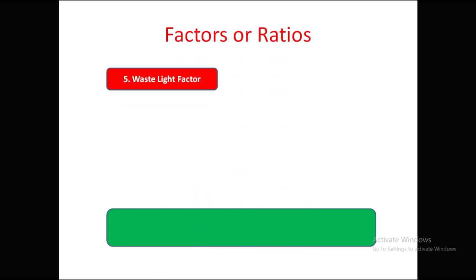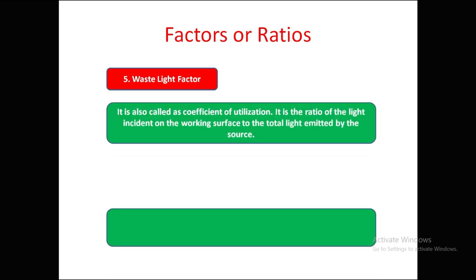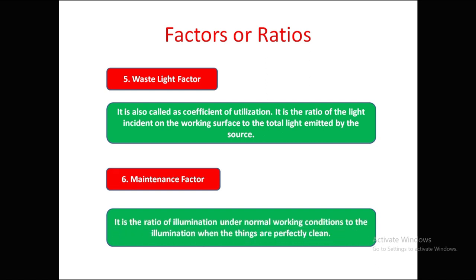Waste light factor is also called coefficient of utilization. It is the ratio of light incident on the working surface to the total light emitted by the source. Maintenance factor is the ratio of illumination under normal working conditions to the illumination when things are perfectly clean.